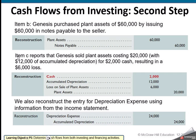Our net book value is the $20,000 minus the $12,000, giving us an $8,000 net book value. We compare that to the $2,000 cash received. So we lost $6,000. That loss is something we add back in our operating section. The $2,000 cash we add into our investing section. Then for depreciation expense — there was a change of $12,000, but $12,000 of that came in because of this sale, which means $24,000 came in from depreciation expense, and that would go into our operating section.